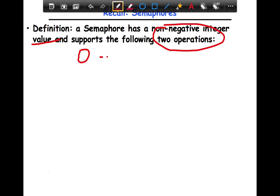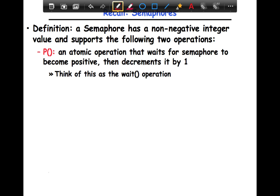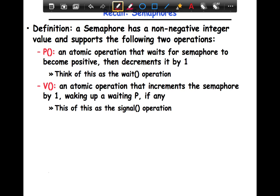There's the P operation, which is essentially an atomic decrement. Whenever the semaphore has a positive value, it decrements it by one. Think of it as kind of a wait operation - we'll look at the usage of these semaphores in a second.